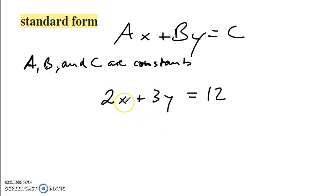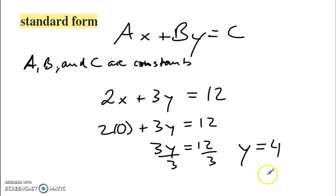Now, if x, for example, was 0, if I plug 0 in for x, plus 3y equals 12, then I would get 3y equals 12. I could divide by 3 on each side, and I'd get y is equal to 4.